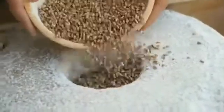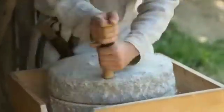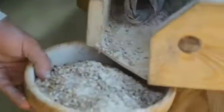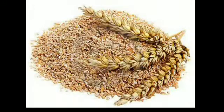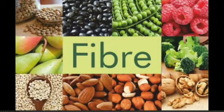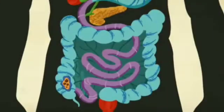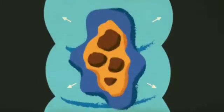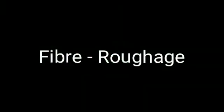Fibre: When grain like jowar or wheat is ground into flour, the particles in the flour are not all alike. When the flour is sifted, we find the larger particles left behind on the sieve. These particles are fine pieces of the skin or bran of the grain. Bran is a fibrous substance. Fibrous substances help the food to move forward in the alimentary canal at the right speed. Fibre helps to form stool from undigested food. Fibre is also called roughage.